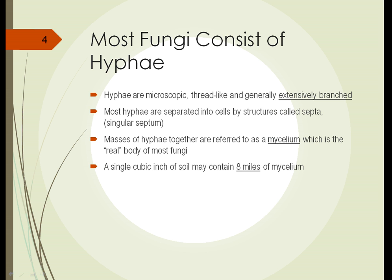Most fungi consist of something called hyphae. Hyphae are microscopic, thread-like, generally very branched structures — think of it like the stem of a plant or the trunk of a tree that branches out, except with hyphae the branches occur everywhere.